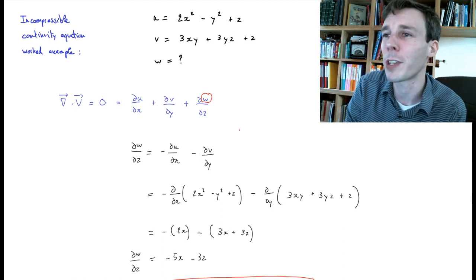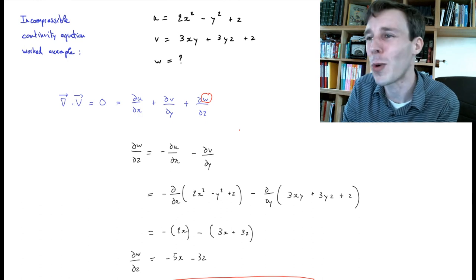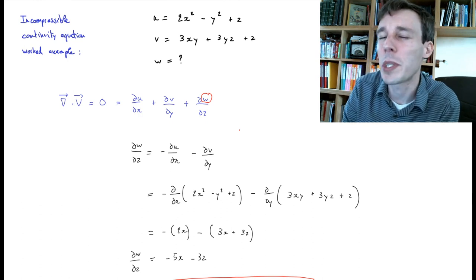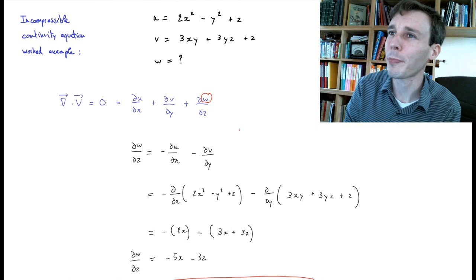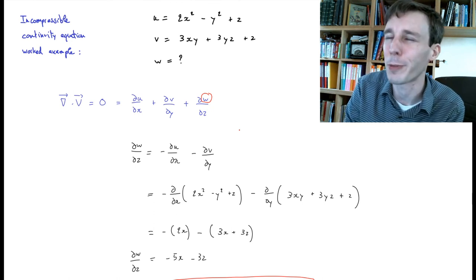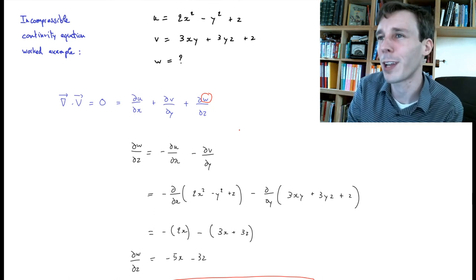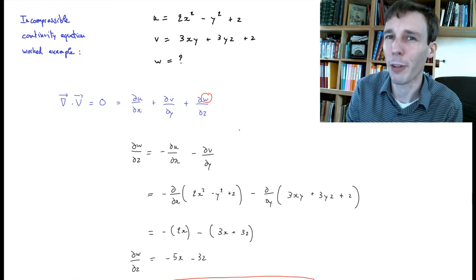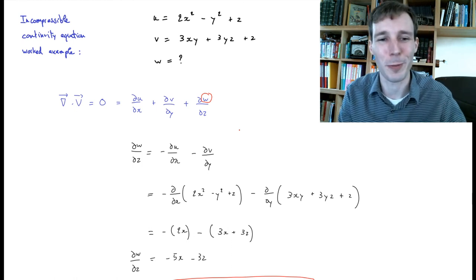And so this is a major frustration for a fluid dynamicist that the continuity equation is not enough to predict what's going to happen to flows. Anyway, this is how you calculate the third component of a three-component velocity field based on the incompressible continuity equation. Here you go.